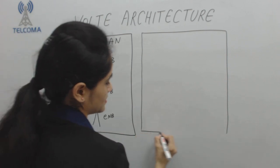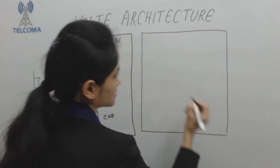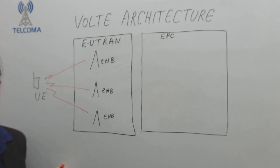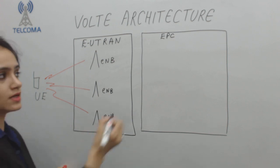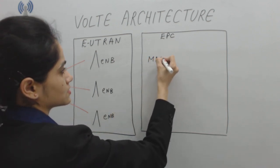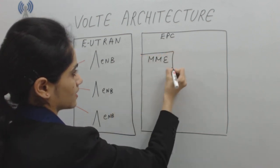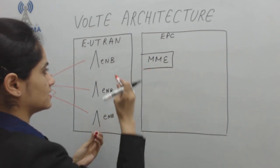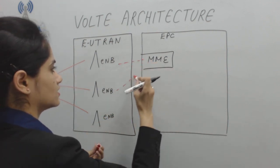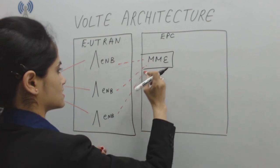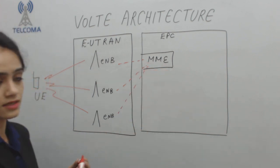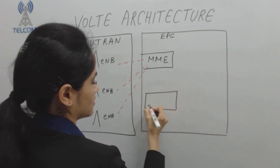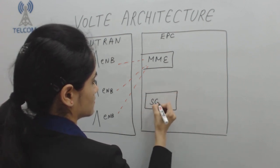In the EPC — Evolved Packet Core — the entities include the MME (Mobility Management Entity). The eNodeB is attached to the MME via the S1-C link. We also have the Serving Gateway (SGW), and the eNodeB is attached to the SGW via the S1-U interface, as discussed in the 4G architecture.